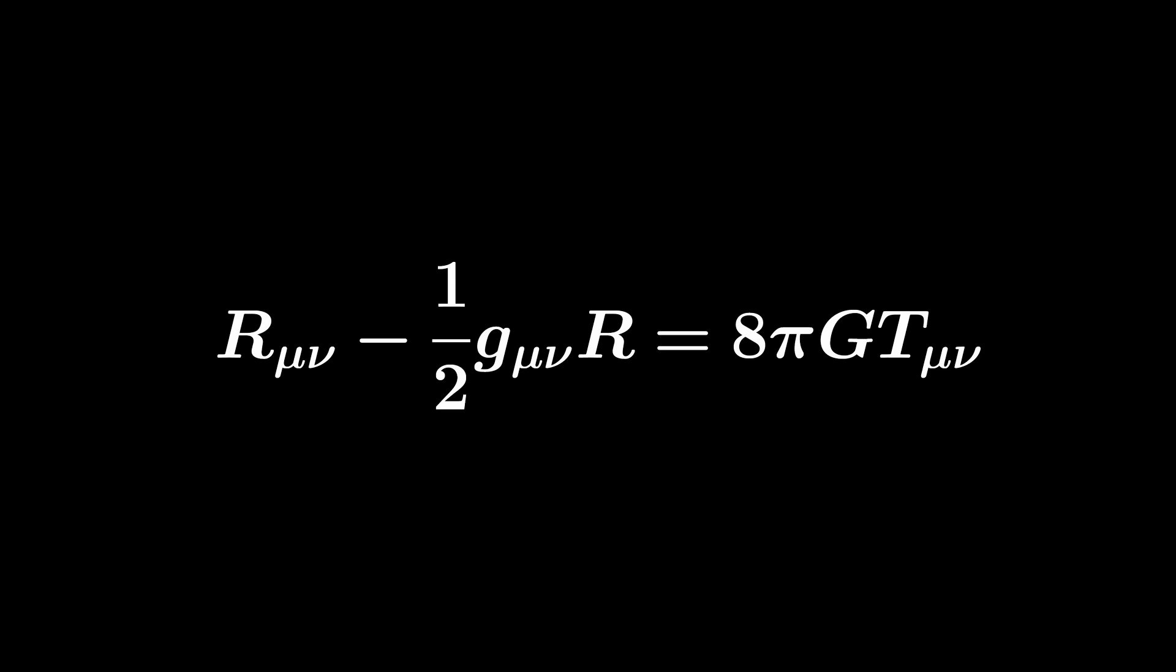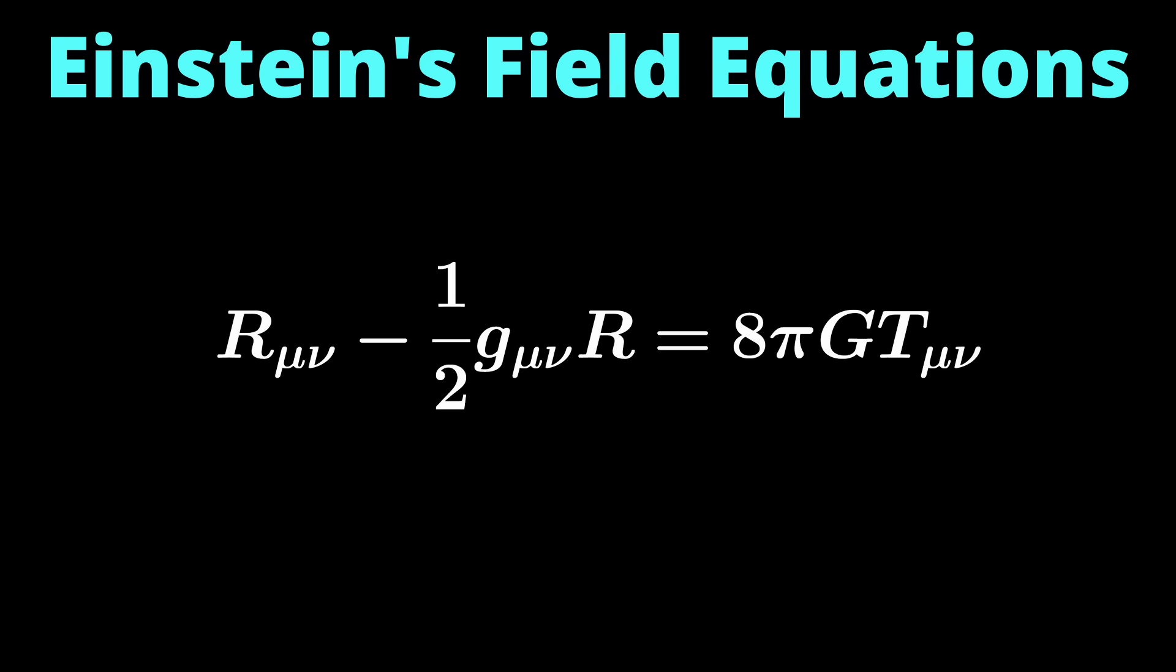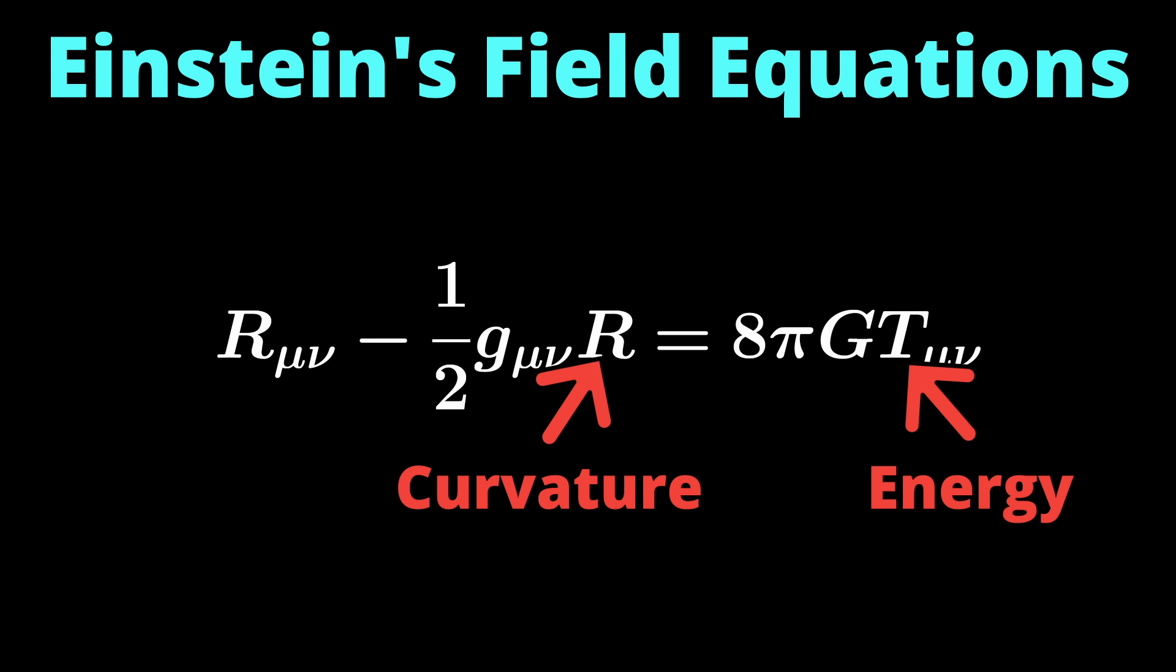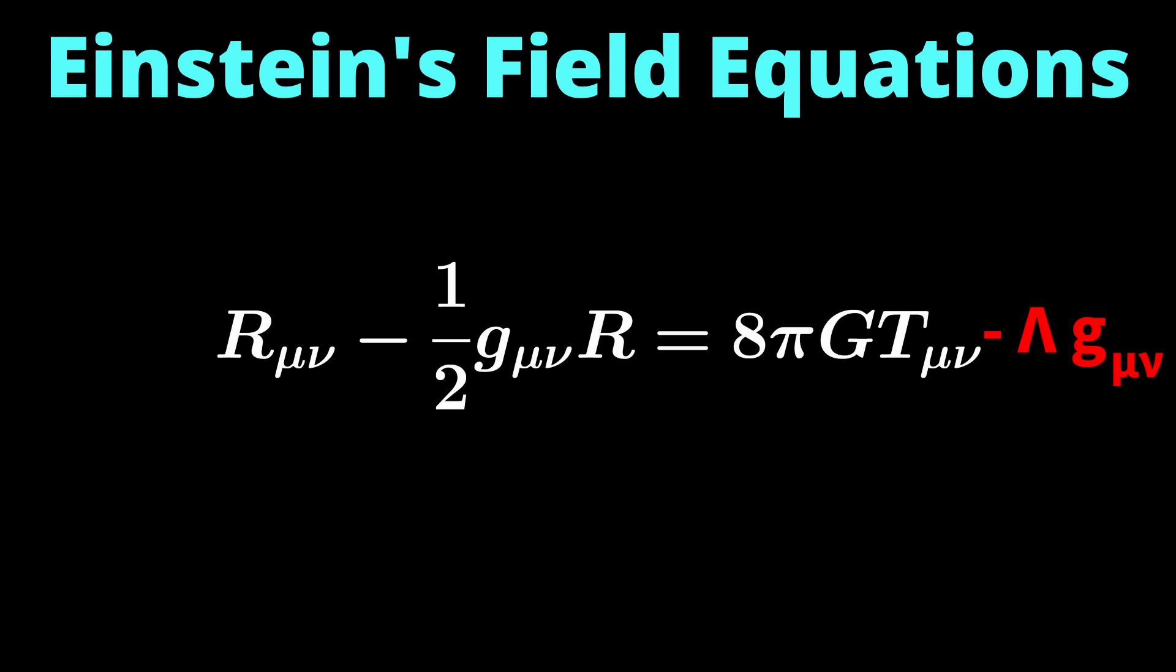You see, have a look at Einstein's field equations. On the left side, you have the curvature contribution, the geometric part. On the right side, you have all the sources of energy that cause the curvature. Normally, physicists write the cosmological constant on the right side, as if it was part of the energy terms. Personally, I think it belongs on the left side. It's just part of the geometry. In any case, it's clearly a matter of interpretation whether the cosmological constant actually has something to do with the energy of the vacuum.